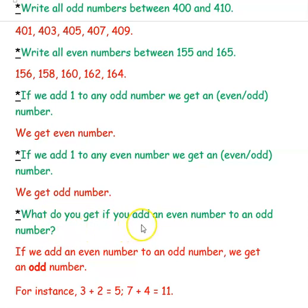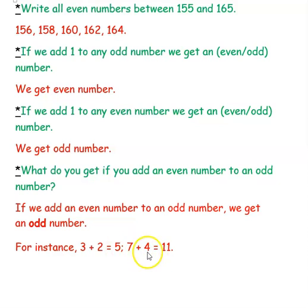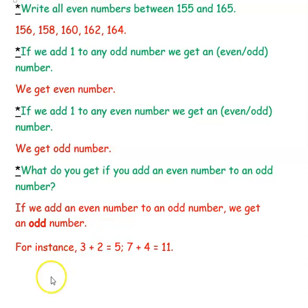What do you get if you add an even number and an odd number? You will always get an odd number. For example, 3 plus 2 equals 5: 3 is odd and 2 is even, giving odd 5. Similarly 4 plus 7 equals 11 — an even plus an odd always gives an odd number. Hope you have understood how to find the patterns and the difference between even and odd numbers. Thank you for watching the video.